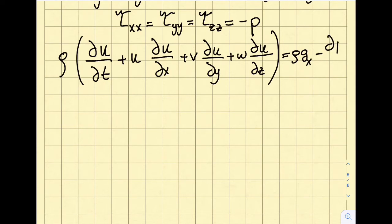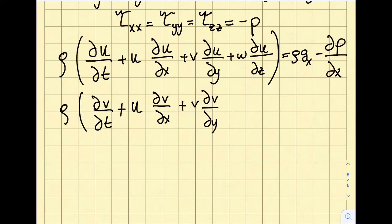If I repeat this procedure in the y-direction: ∂v/∂t + u∂v/∂x + v∂v/∂y + w∂v/∂z = ρgy - ∂p/∂y. Similarly for z-direction: ∂w/∂t + u∂w/∂x + v∂w/∂y + w∂w/∂z = ρgz - ∂p/∂z.